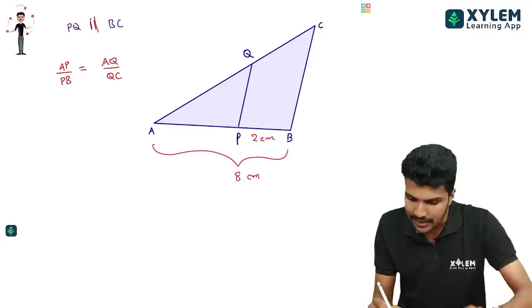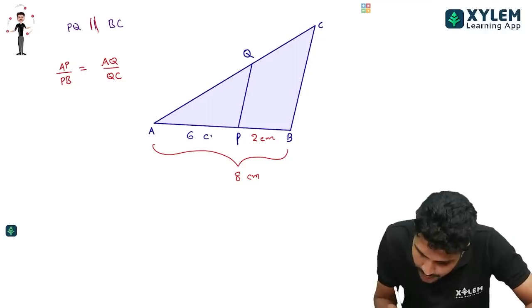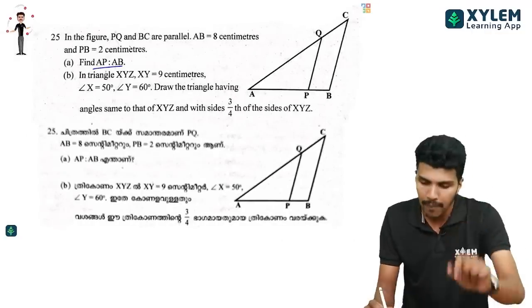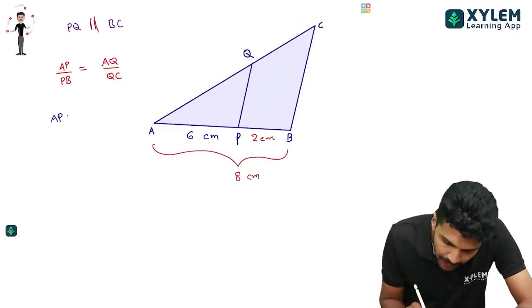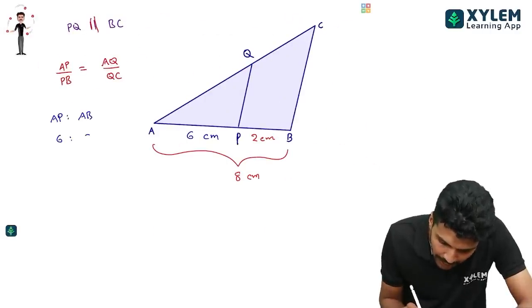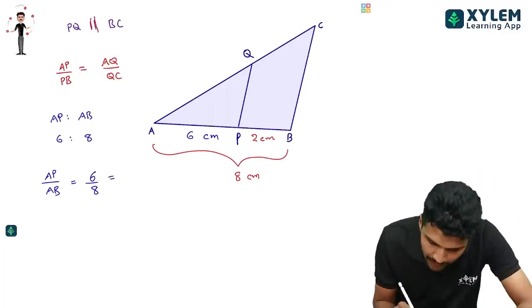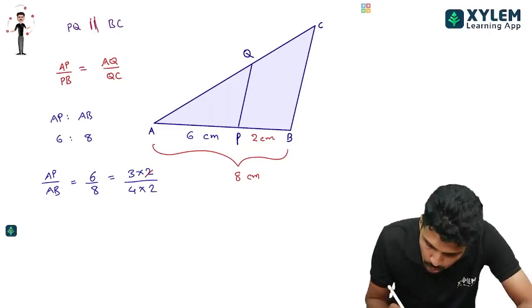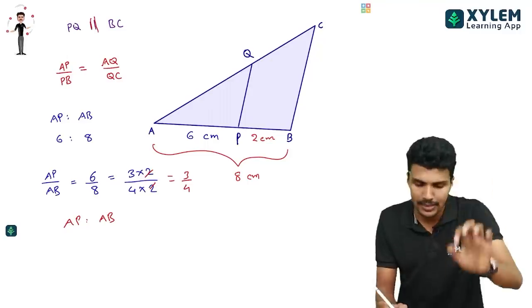Now, AP is 6 cm. AP is to AB. AP means 6 cm, AB means 8 cm. So AP by AB means 6 by 8. This simplifies: 6 by 8 equals 3 into 2 by 4 into 2, which gives us 3 by 4.